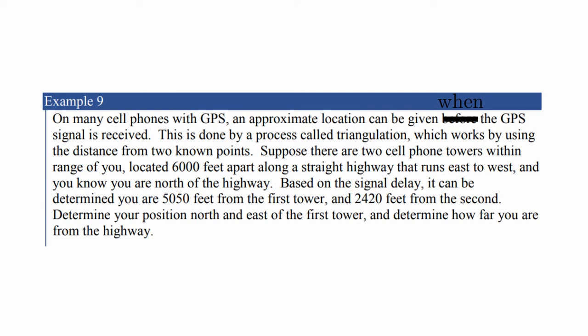So here we go. Example 9, on many cell phones with GPS, an approximate location can be given when the GPS signal is received. This is done by a process called triangulation, which works by using the distance between two known points. Suppose there are two cell phone towers within range of you, located 6,000 feet apart along a straight highway that runs east to west, and you know that you are north of the highway. Based on the signal delay, it can be determined that you are 5,050 feet from the first tower, and 2,420 feet from the second. Determine your position north and east of the first tower, and determine how far you are from the highway. Again, take a moment, draw the picture. Pause the video and draw the picture.